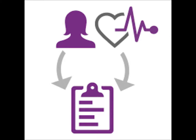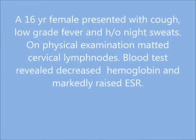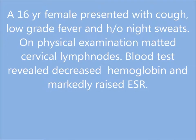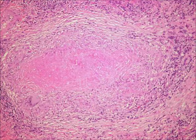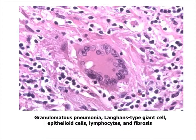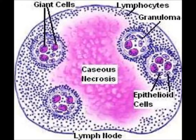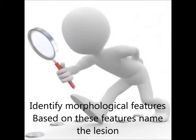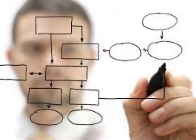The clinical scenario is typically a 16-year-old or young child with cough, low-grade fever, and history of night sweats. On physical examination you can see matted lymph nodes in the neck. Biopsy of the lymph nodes will show caseating granulomas and typical Langhans-type giant cells, with nuclei placed in the periphery. This is the sketch of the lymph nodes showing caseous necrosis and multiple granulomas.